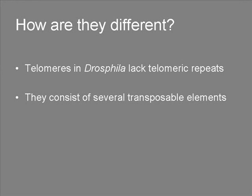But what is different in Drosophila telomeres compared to other eukaryotes? Telomeres in Drosophila do not consist of the telomeric repeats discussed before, but instead consist of several transposable elements.